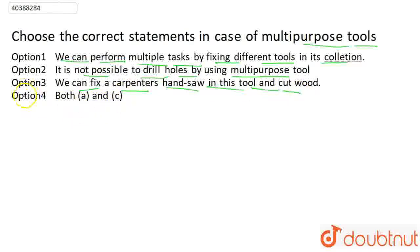So the correct answer is - why, do you understand this? The first option is: We can perform multiple tasks by fixing different tools in the collection. So let's say we have different tools - let's suppose we have a hammer and a screwdriver.